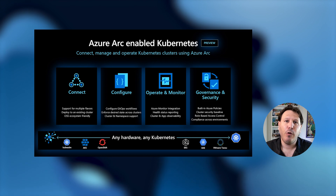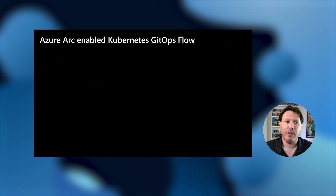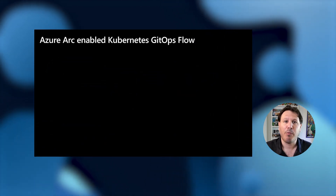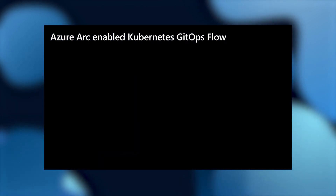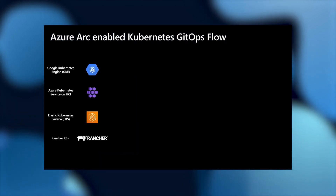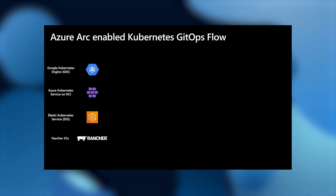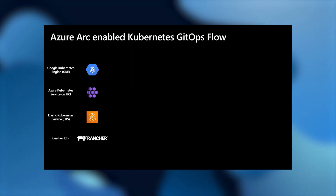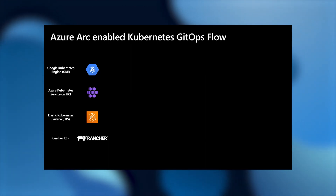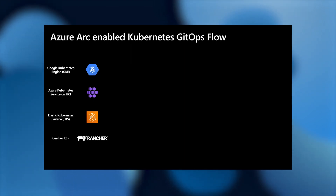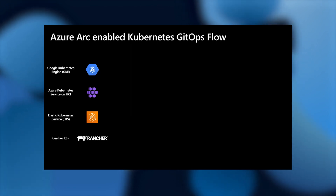Specifically today, what we're going to focus on and demo is what you can do with Azure Arc-enabled Kubernetes and a GitOps flow. We're going to start with four clusters: a GKE cluster deployed in Google, an Azure Kubernetes Service on HCI — which is our new Azure flavor of Kubernetes deployment — an Elastic Kubernetes Service EKS deployed on Amazon, and a Rancher K3S cluster deployed on top of VMware vSphere.